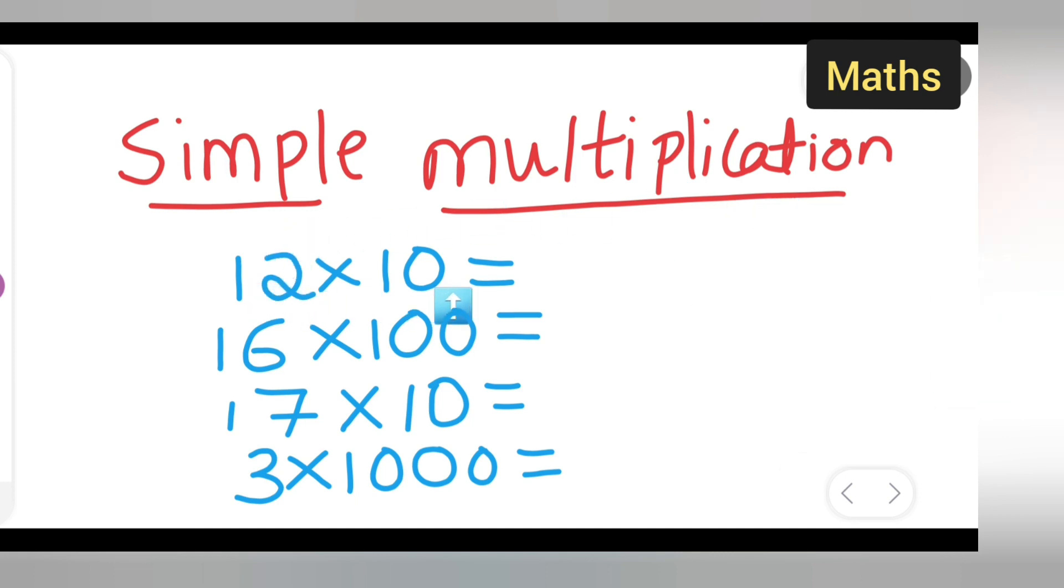So 12 tens are, what answer you will get? Directly write down 1, 2, 0.